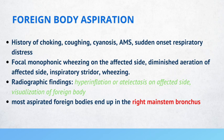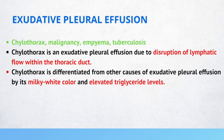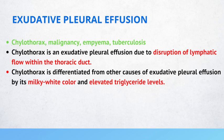Exudative pleural effusion. This can be due to conditions such as chylothorax, malignancy, empyema, or tuberculosis. A chylothorax is an exudative pleural effusion due to a disruption of lymphatic flow within the thoracic duct. A chylothorax is differentiated from other causes of exudative pleural effusion by its milky white color and elevated triglyceride levels.